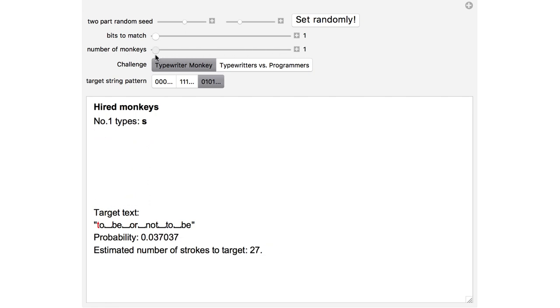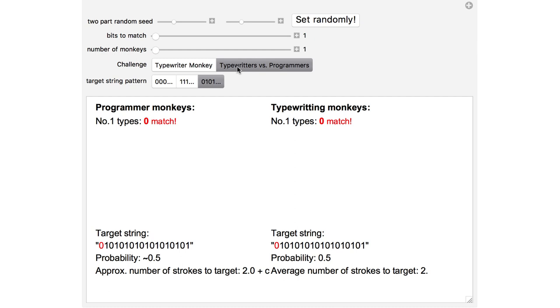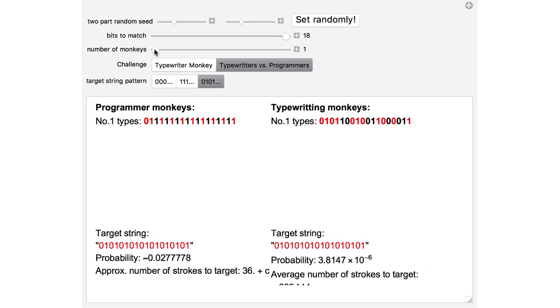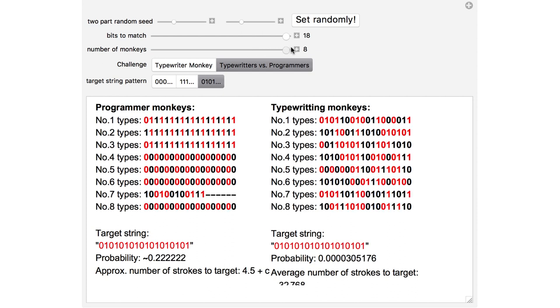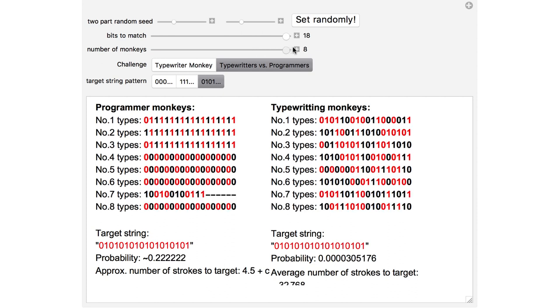This exact algorithmic probability cannot really be computed but can be approximated. A lower bound using Shannon entropy tells that the probability of the programmer monkey to hit the target binary sequence is 1 over the shortest computer program producing the string, which cannot be shorter than the logarithm in base 2 of the string length, and should be quite close if the string is highly compressible or not random.